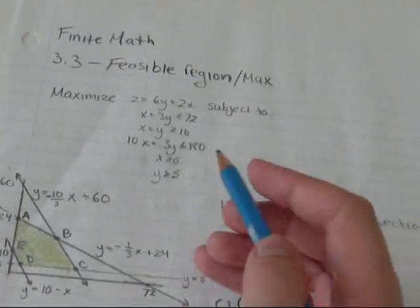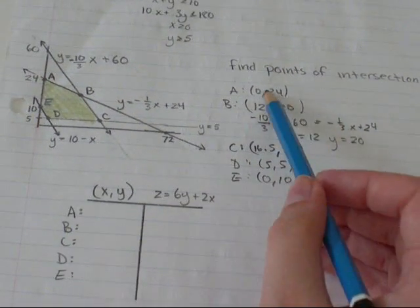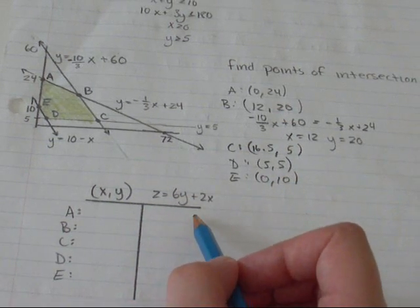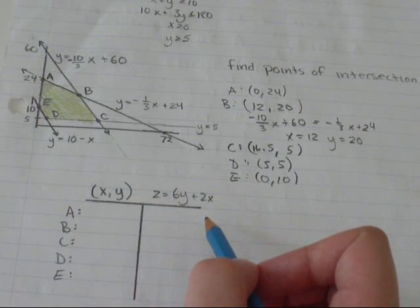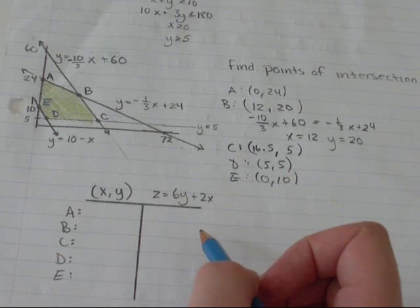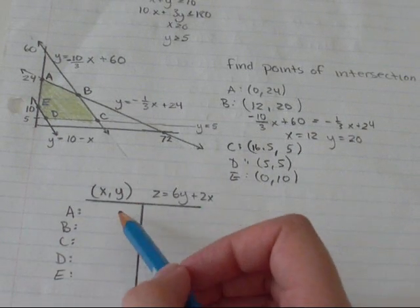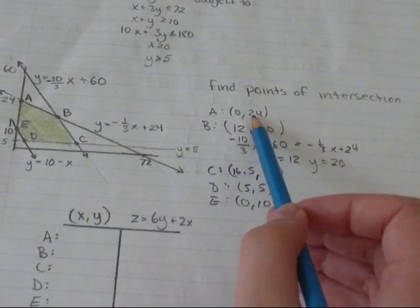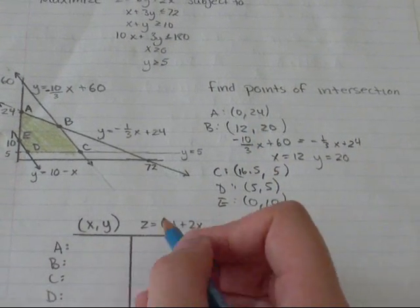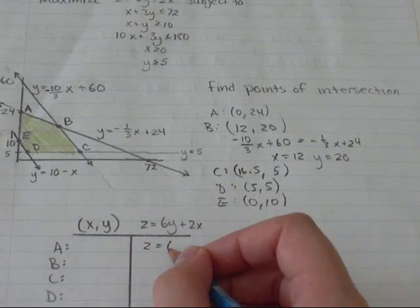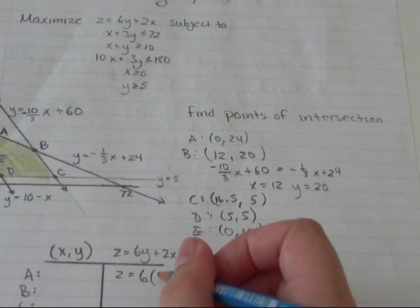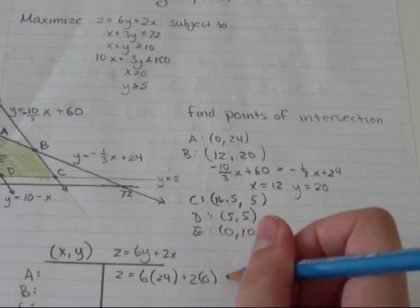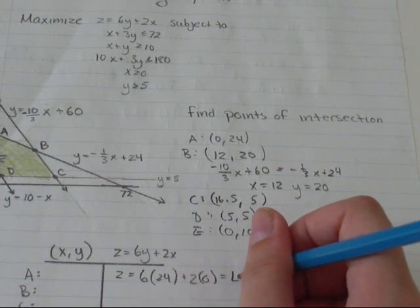Now, to find where we're going to maximize this, we're going to plug all these points in and use them to solve z equals 6y plus 2x. So I'm running out of room on my memory card. I can't talk anymore. So I'm not going to rewrite all these points. So I'm going to just refer to the points I've written out over here. So I'm going to get z equals at A, 6 times y was 24 plus 2 times x was 0. And that gives me a value of 144.